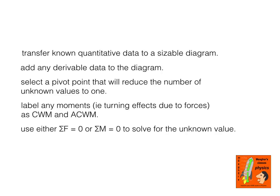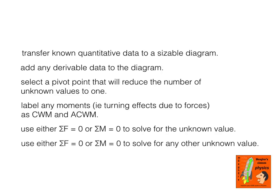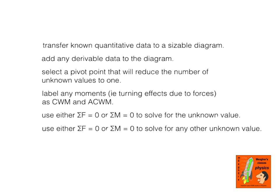Once you've done that, you can again use the sum of the forces equals zero or the sum of the moments equals zero to solve for that other unknown value — the one that was acting through the pivot point. So let's have a look at a few examples.